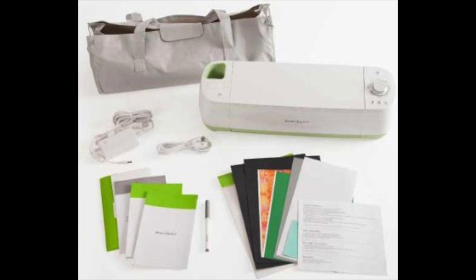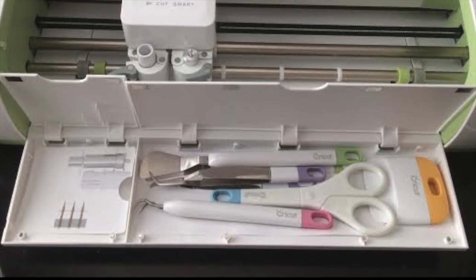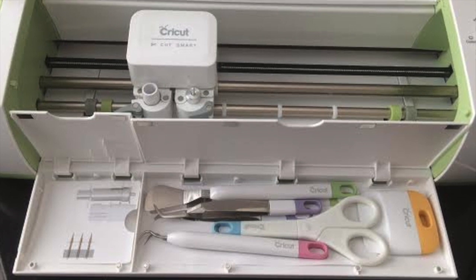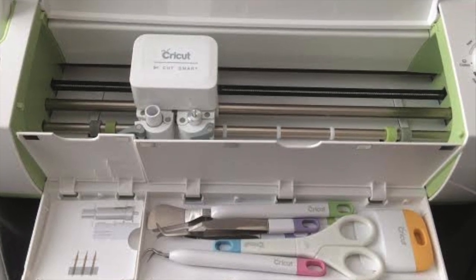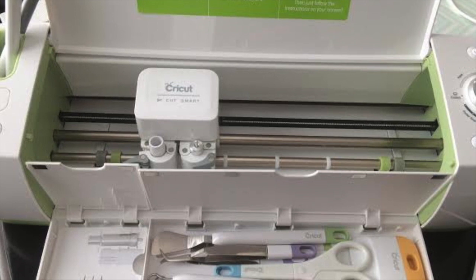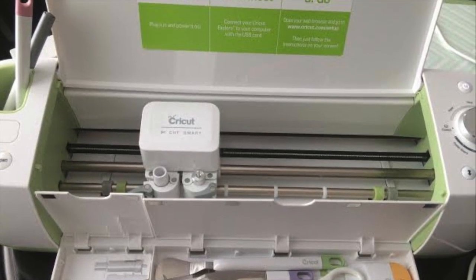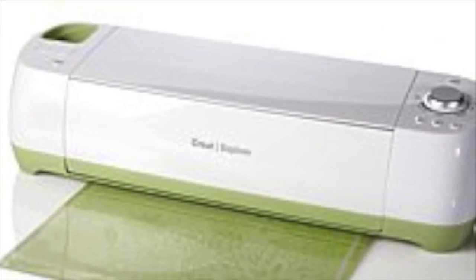And let's talk about storage space. This has got tons of storage space for all of your tools, your blades, your deep cut blade, and it's got top storage for your pens and anything else you need so all of your tools are right there for you right when you need them. And did you know that it even has a place to store your mat right under the machine? This is why I think just right out of the box the Explore is definitely the way to go over the Cricut Expression 2.